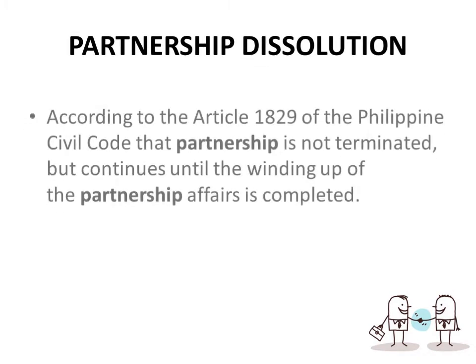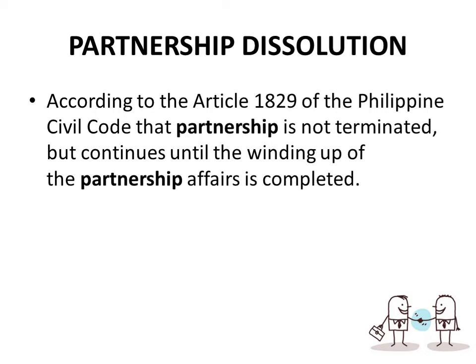Partnership dissolution, according to Article 1829 of the Philippine Civil Code, is when the partnership is terminated but continues until the winding up of the partnership affair is completed. Dissolution is quite different from winding up because in dissolution, the remaining partner or the additional partner can still do business together. In winding up, there is a cessation of the business — the partnership is already closing, so there will be no more operations.